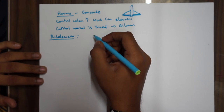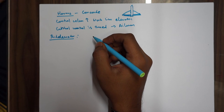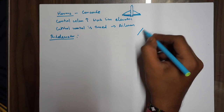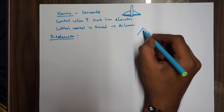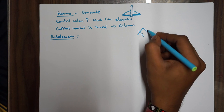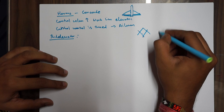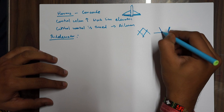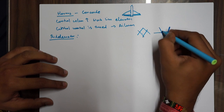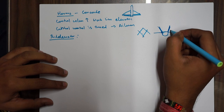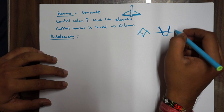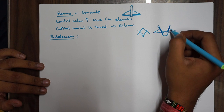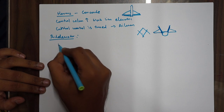Ruddervators function like both a rudder and an elevator. They are generally used in air force fighter jets. Viewed from behind, ruddervators are in a V-shape around the exhaust. They are rudder plus elevators. Suppose this is the wing — the ruddervator sits on top.